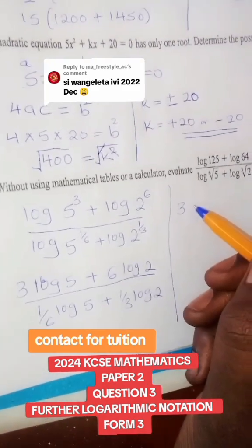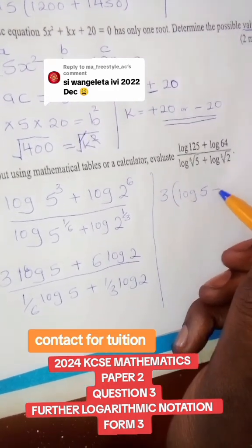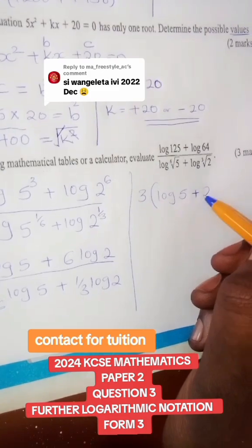So if you put 3 outside, we'll say 3 goes there, log 5, plus 3 will go into 6 two times. So we have 2 log 2.